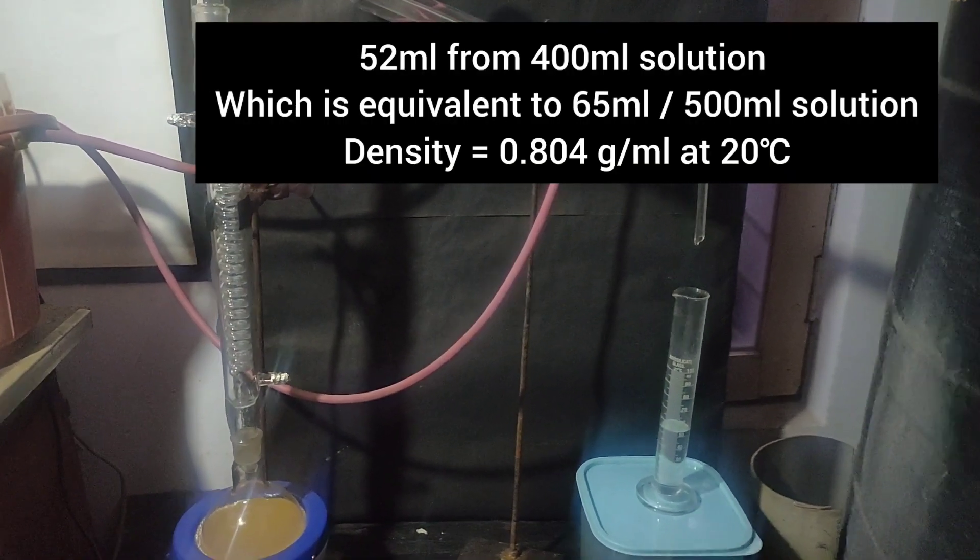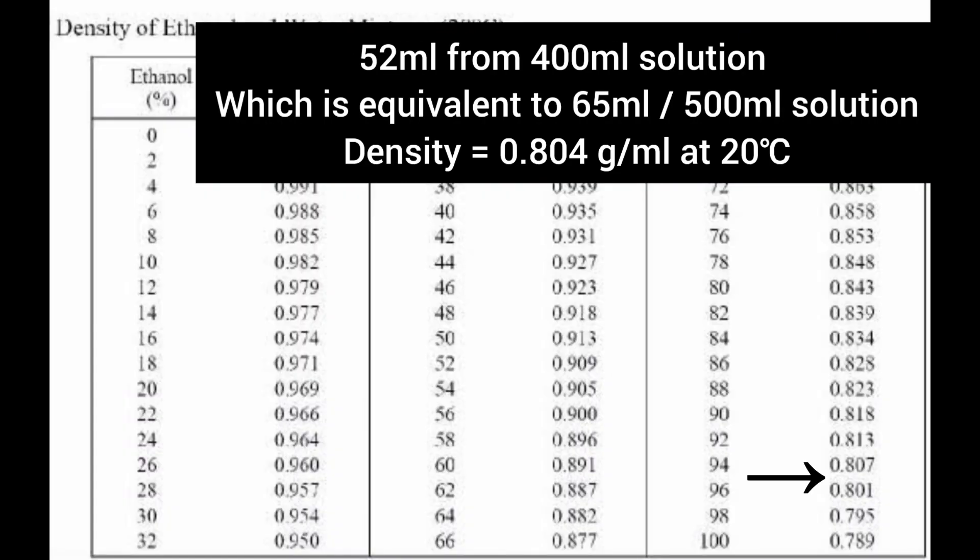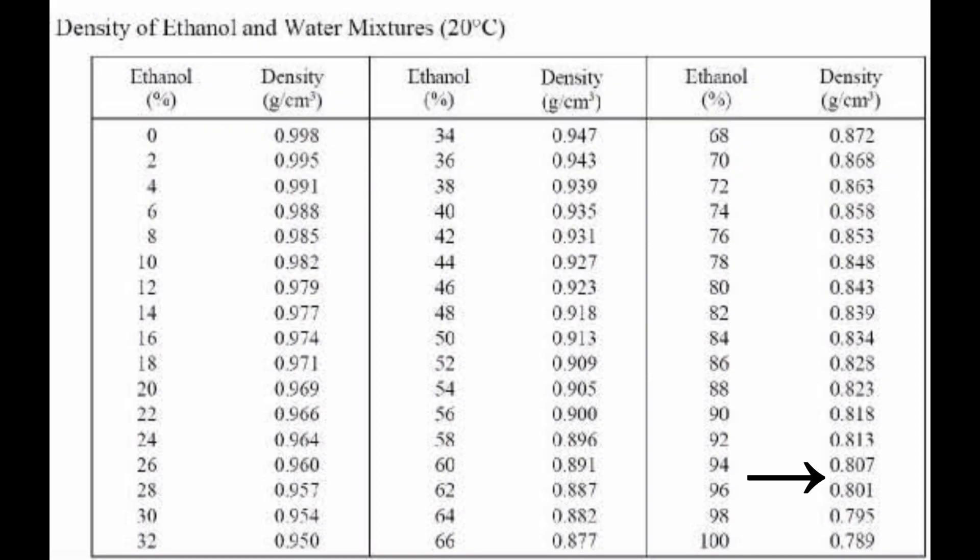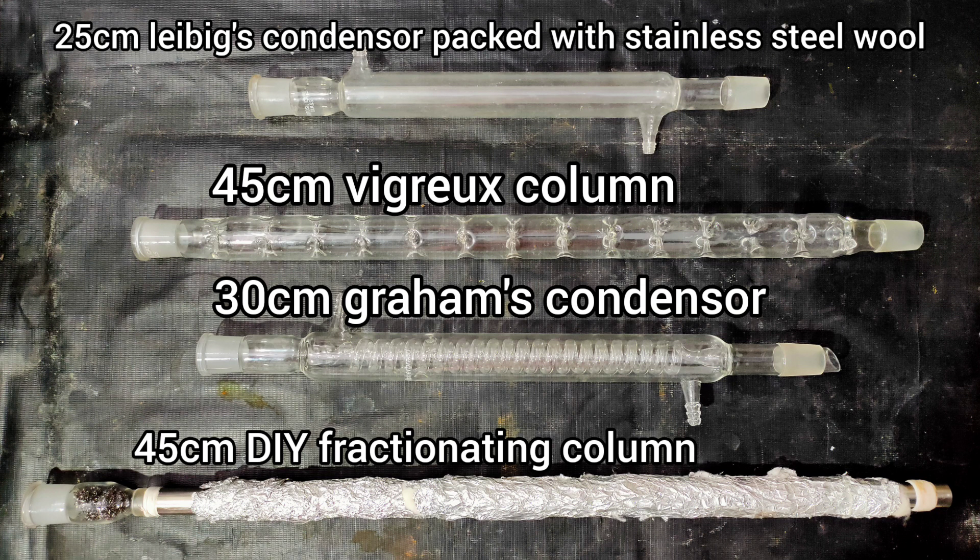When at 78 degrees Celsius distillate stopped coming over, 52ml of distillate was collected from 400ml solution which is equivalent to 65ml per 500ml solution. I checked its density, it was around 0.804g per cc at 20 degrees Celsius. From the table, it corresponded to 95% weight by weight ethanol, which is very close to the azeotropic 95.6% ethanol-water mixture. So in this way, a Graham's condenser can also work as a very good fractionating column, even better than a Vigreux.